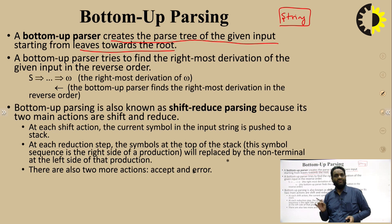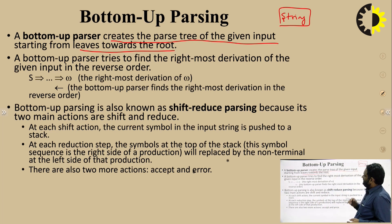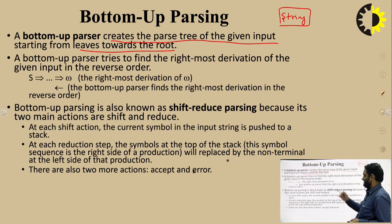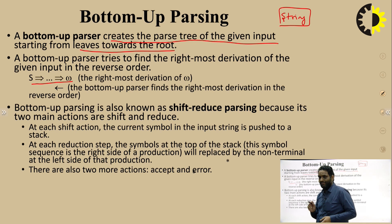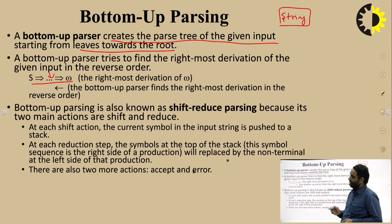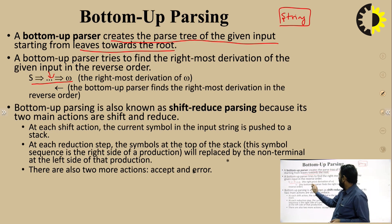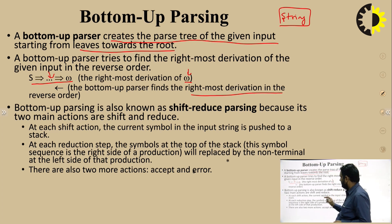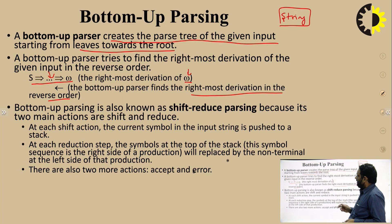In a Bottom-up Parser, we start with the string and our processing ends at the start symbol. The second point is that a Bottom-up Parser tries to find the rightmost derivation of the given input in reverse order. We understand how the start symbol, going through a number of steps, produces the given string. By reversing this process, we get the Bottom-up Parser. This is the rightmost derivation of omega — the Bottom-up Parser finds it in reverse order.